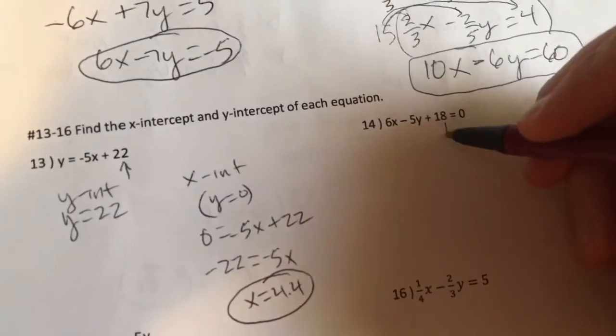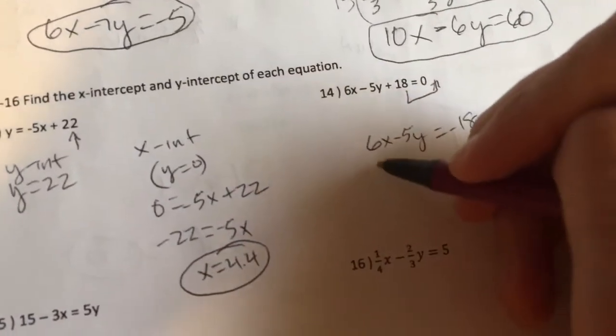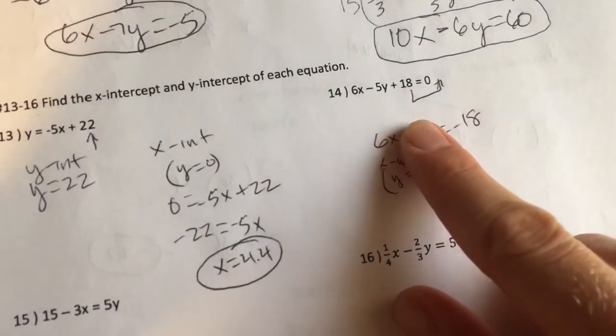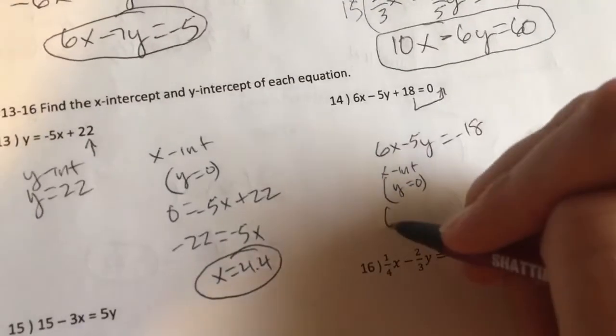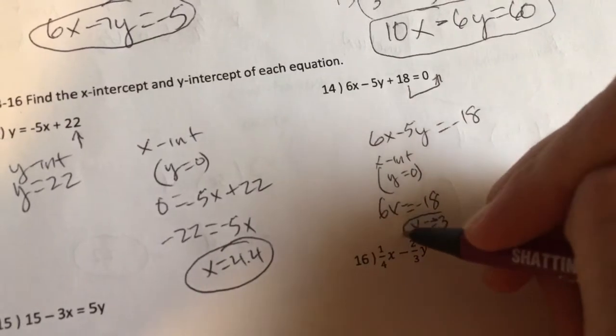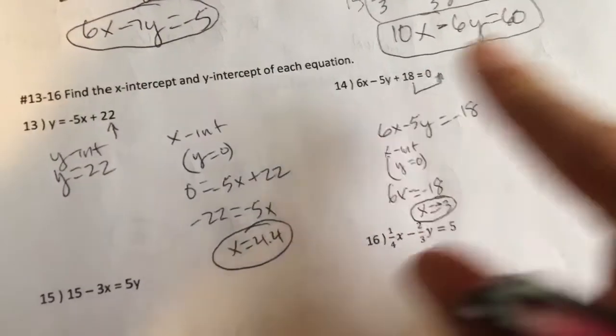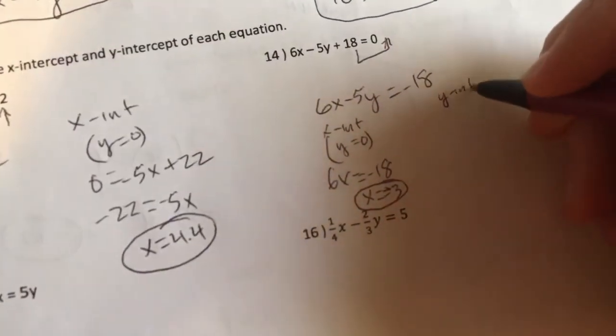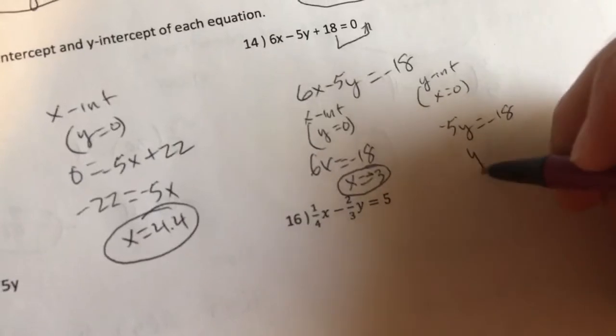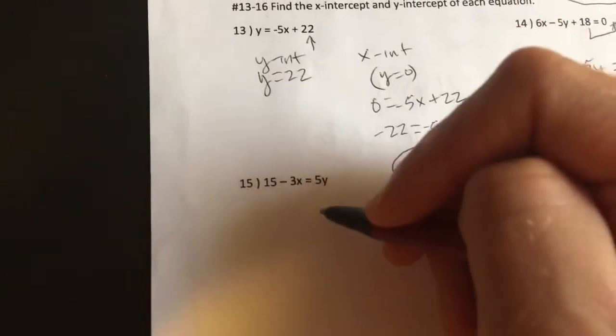All right. We've got standard form here, so move that 18 over. Now, the x-intercept is when y equals 0. So, cover that y up just like this. You have 6x equals negative 18. 6x equals negative 18. x is a negative 3. All right. x-intercept or y-intercept is when x equals 0. So, you have negative 5 equals. Again, you don't have to write this, but this is what we're doing. Negative 5 is equal to negative 18. A negative divided by a negative is a positive. You get 3.6. 3.6.